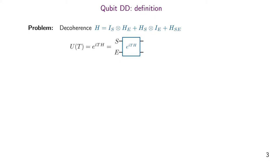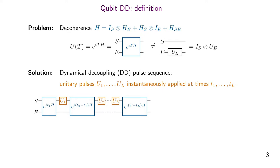The problem of decoherence introduced by this Hamiltonian can be written as follows. The time evolution under this Hamiltonian after some time T, presented here as some circuit on the system and environment, usually acts non-trivially on the system — so it disturbs our system. I always use blue colour for the decoherence and later orange for the decoupling sequence. Now the idea of decoupling is to apply unitary operations instantaneously to the system at specific times T1 to TL, so that the joint evolution of system and environment looks as follows: we first let everything evolve until time T1, then apply the first pulse to the system.